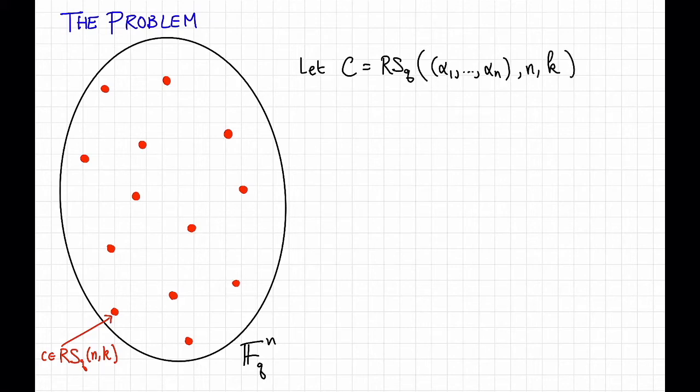We saw in a previous video that the list decoding problem was: given some y equal to y1 dot dot dot up to yn in fq to the n, we would like to find all of the code words c that are close enough to this received word y.